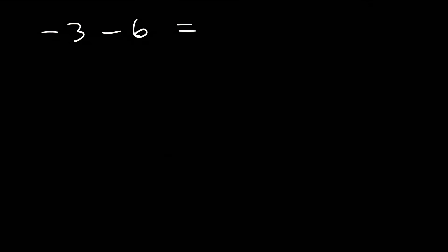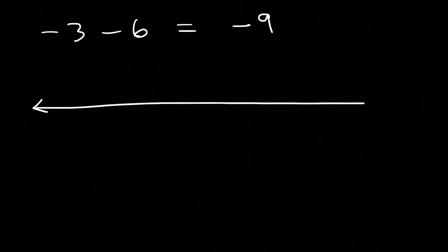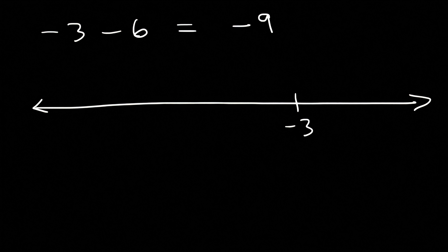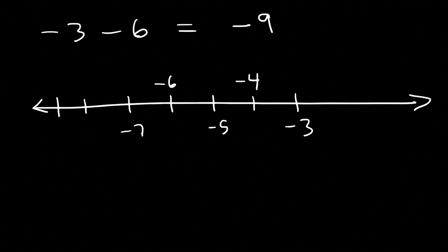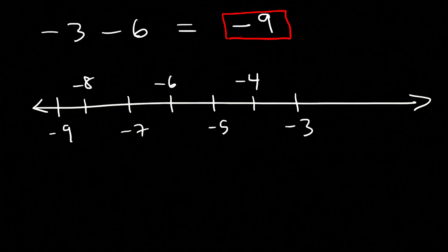What is negative 3 minus 6? You can add 3 and 6 and then make it negative: 3 plus 6 is 9, so the answer is negative 9. Or use the number line: start at negative 3 and travel six units to the left — negative 4, negative 5, negative 6, negative 7, negative 8, negative 9. So negative 3 minus 6 is negative 9.